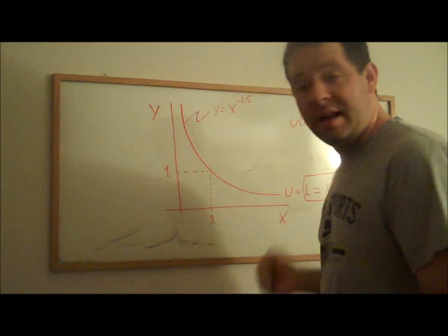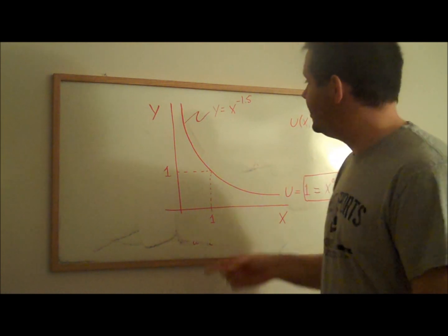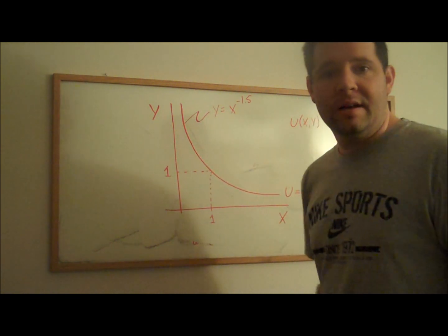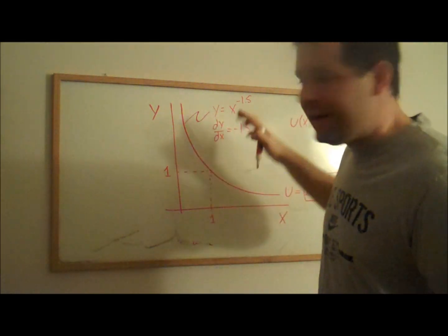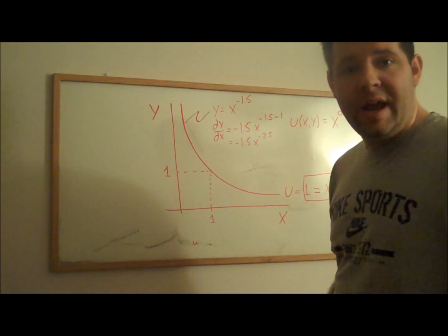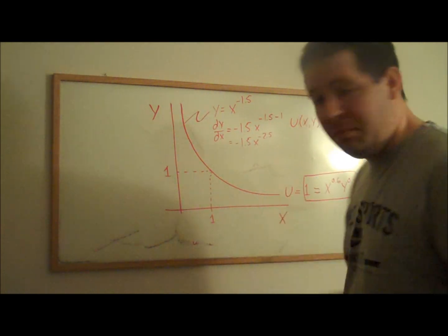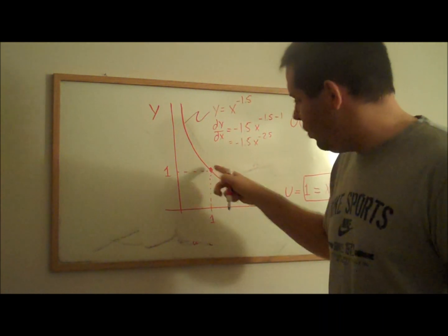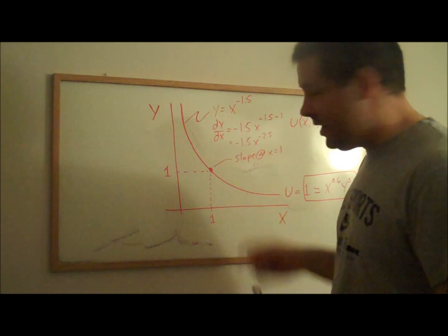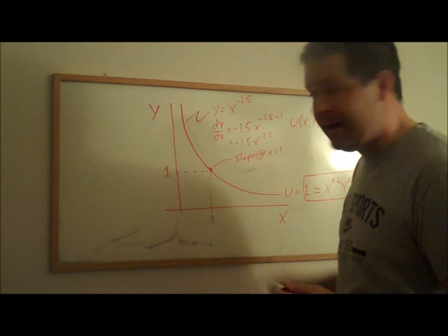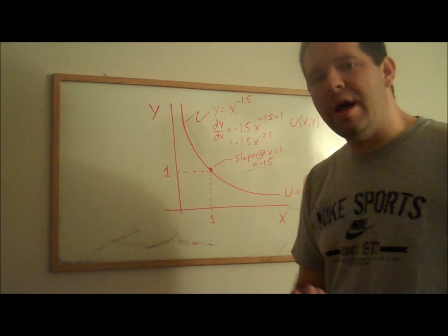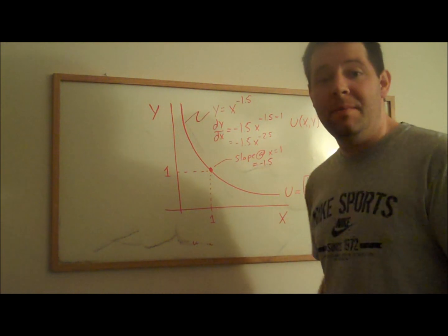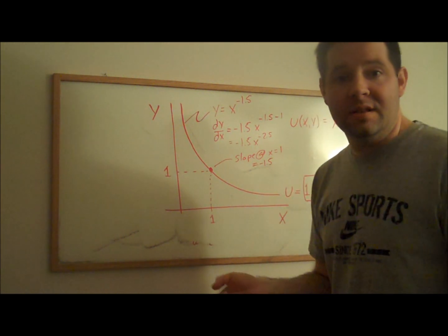Now we can ask, what is the slope at any point along this indifference curve? The simple way, once we have the expression y equals x to the negative 1.5, is to take the derivative with respect to x. Using the power rule — bring the exponent down and subtract 1 — we get an expression for the slope at any point. In particular, at the point y equals 1, x equals 1, we plug in x equals 1 and get a slope of negative 1.5, since 1 to the negative 2.5 is just 1. In the last video I showed how the slope of an indifference curve is related to the marginal utilities, which turns out to be a really fast shortcut.